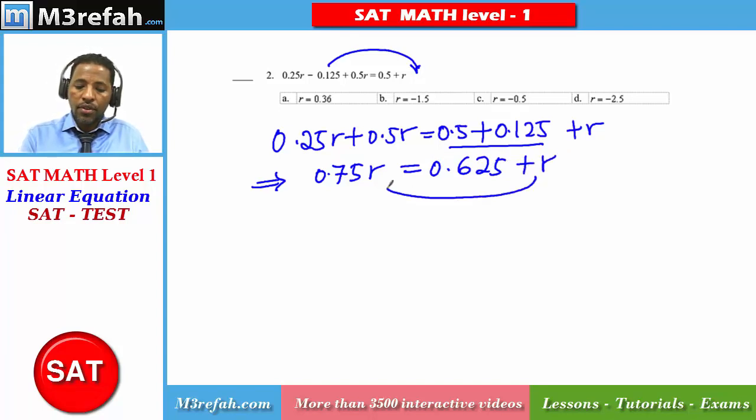Now r should move to the left side to be operated with 0.75r. This implies 0.75r minus r equal to 0.625.